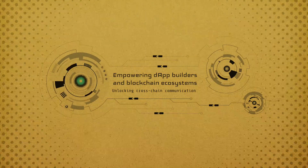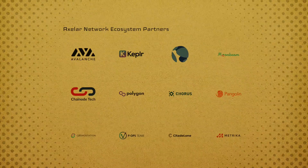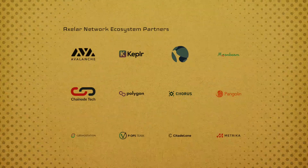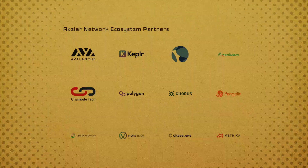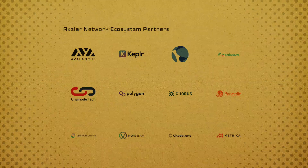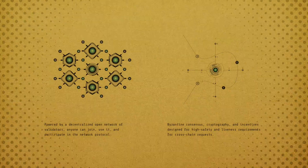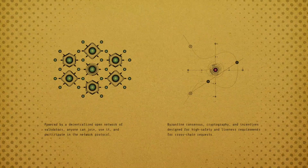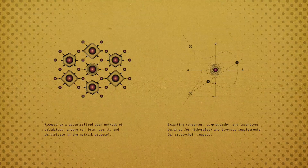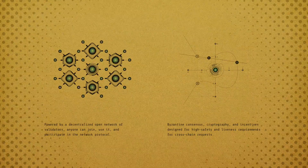It is the universal decentralized interoperability network connecting all blockchain ecosystems, applications, assets, and users. Axelor Network consists of a protocol suite, tools, and APIs designed to break down the barriers to cross-chain communication.